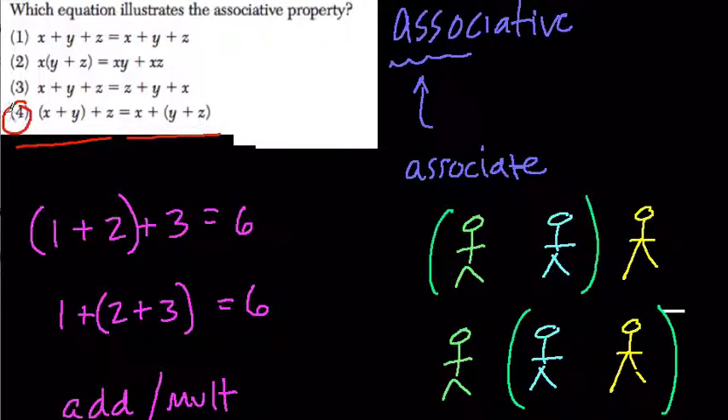And here, I would go for choice 4 because notice the order hasn't changed. It's x, y, and z in both cases. We're using all addition, but in the first one we grouped the x and the y, and in the second one we grouped the y and the z first. And we're saying they'll be equal in both cases, so that's the associative property.